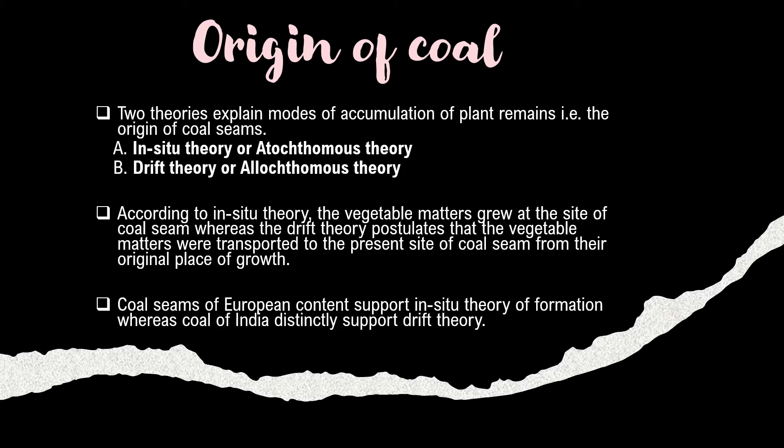According to in-situ theory, the vegetable matter grew at the site of the coal seam. Whereas the drift theory postulates that the vegetable matter was transported to the present site of the coal seam from its original place of growth. Coal seams of European content support the in-situ theory, whereas coal of India supports the drift theory.